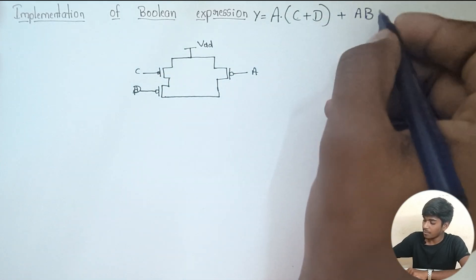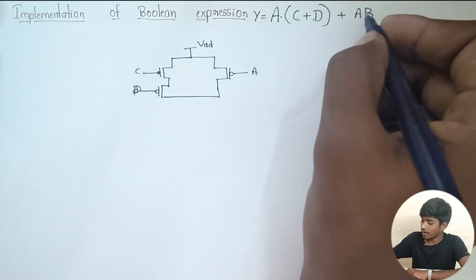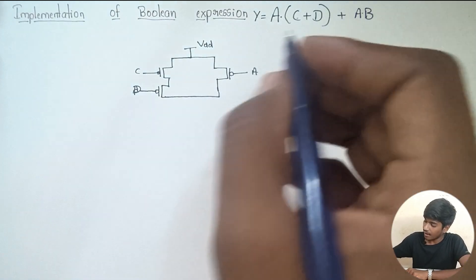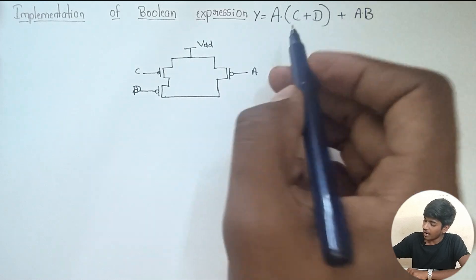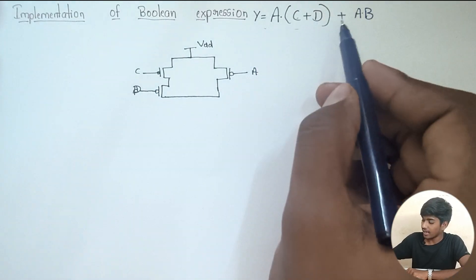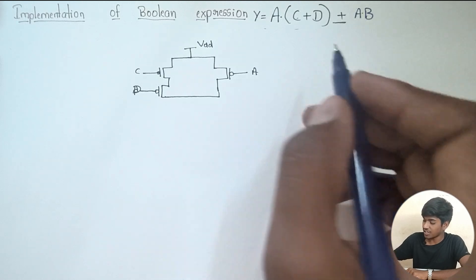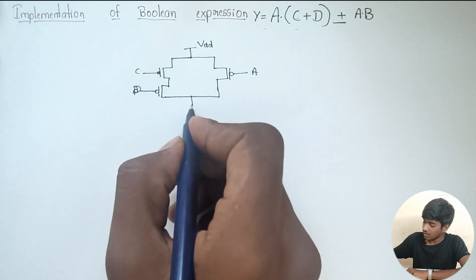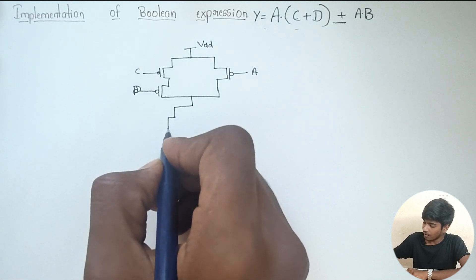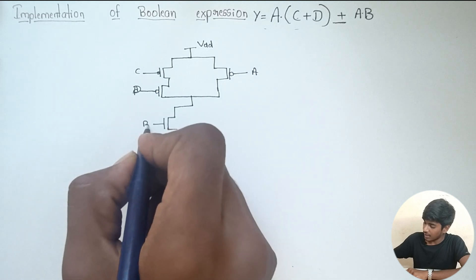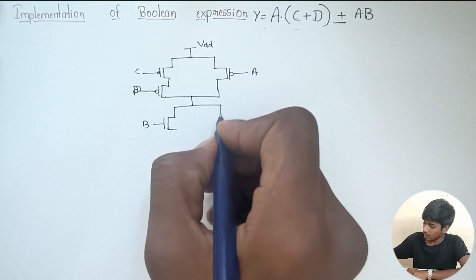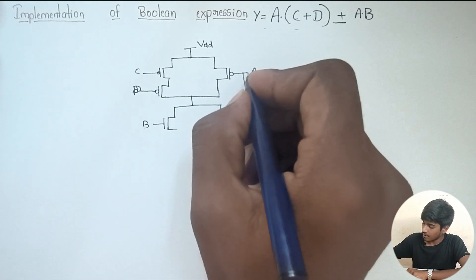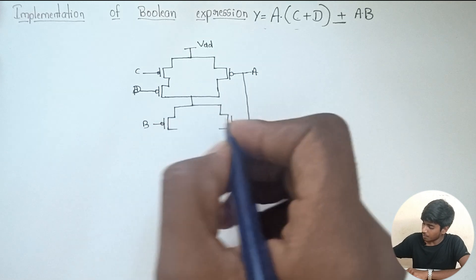Again A and B are performing dot operation, so for PMOS A and B should be in parallel. And how AB and A of C plus D are connected — that is using a dot operation. So for pull-up network, that is PMOS, it should be in series. So we are having B here and A here and this is PMOS.